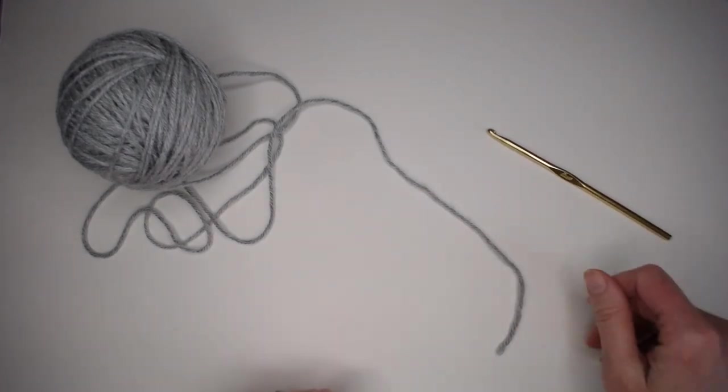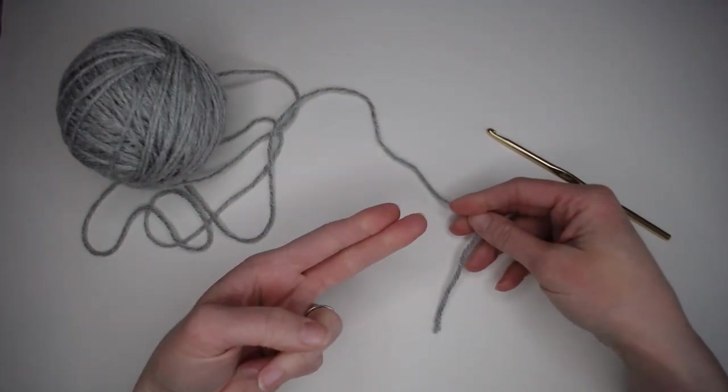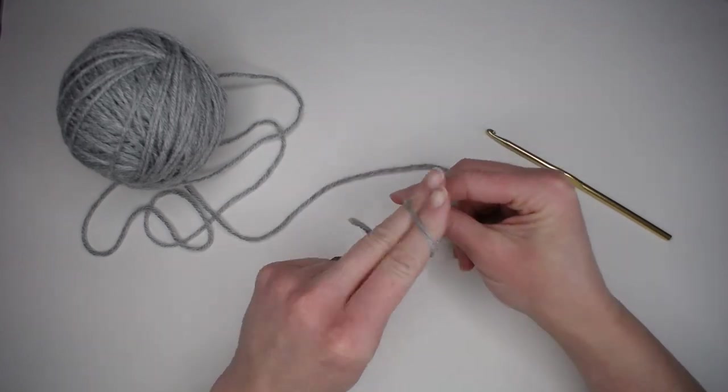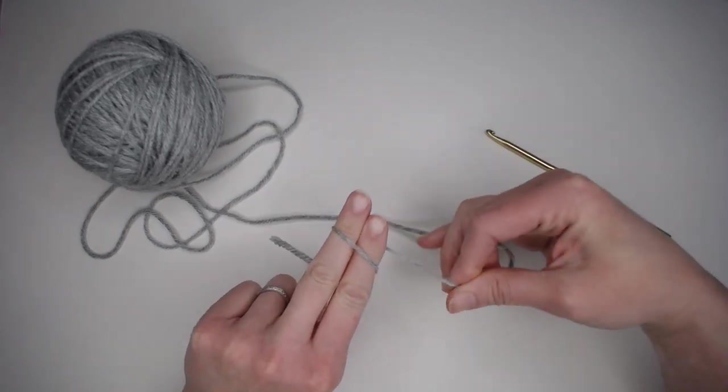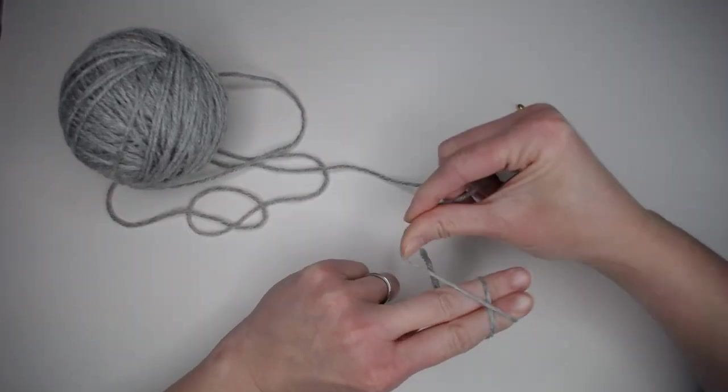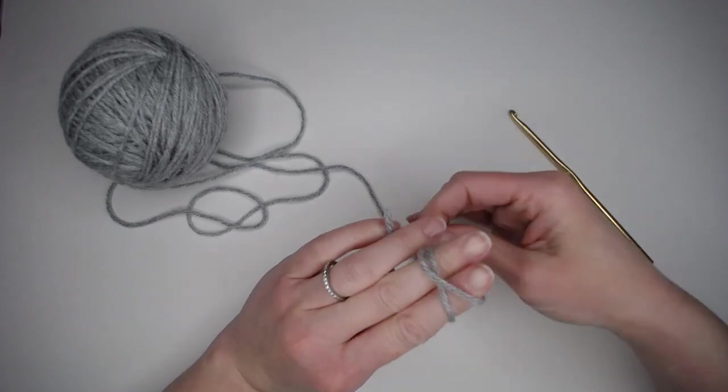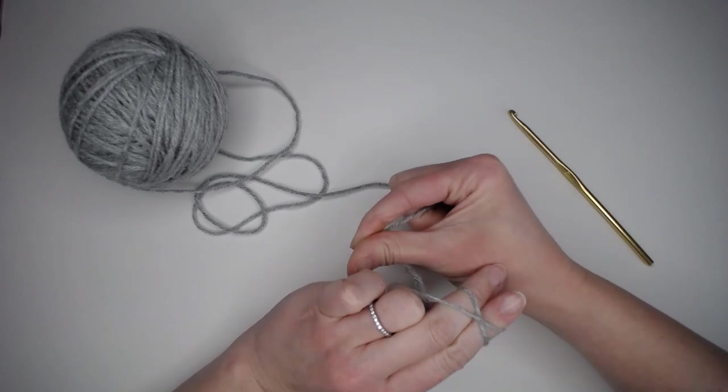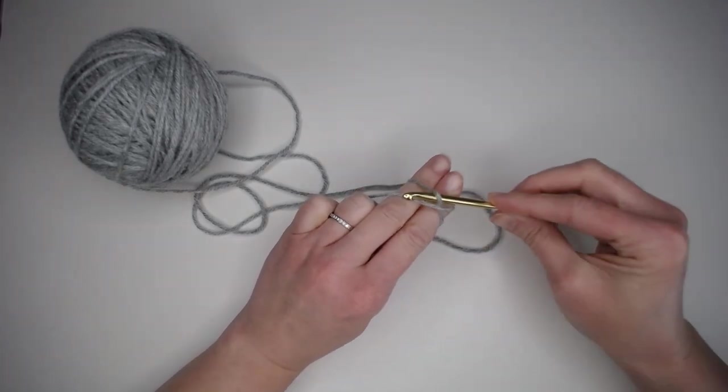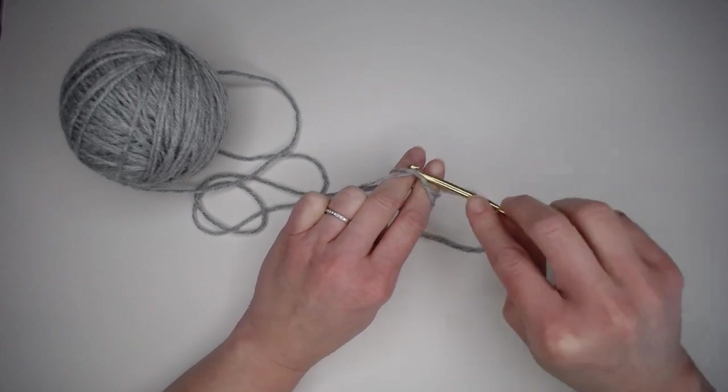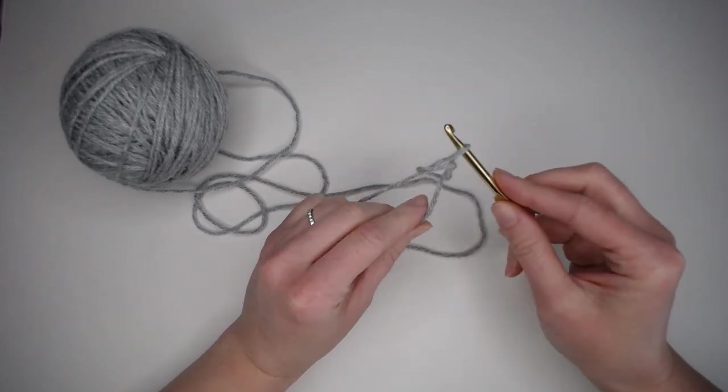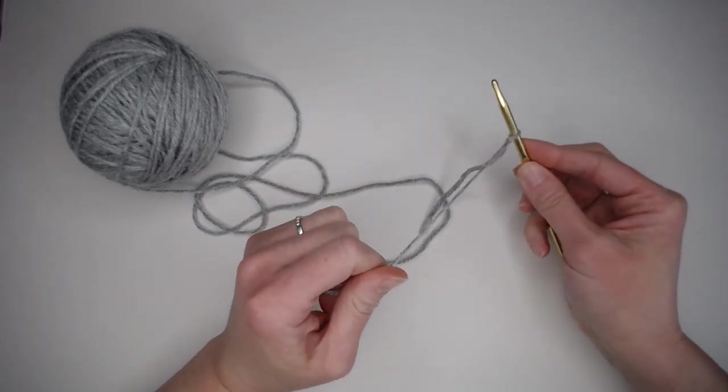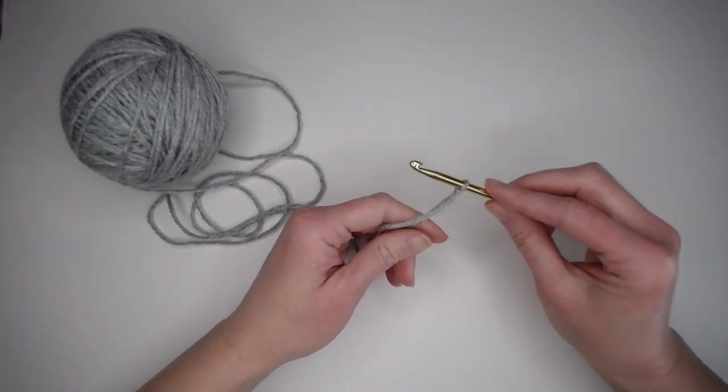The second technique that you can use to create a slipknot is taking two fingers, taking your yarn, wrapping the yarn around both fingers, wrapping again but in an x shape with this second going over the first. I think that's super important. Taking your crochet hook, go under the first, over the second, remove your fingers, pull through, and there is your second slipknot.